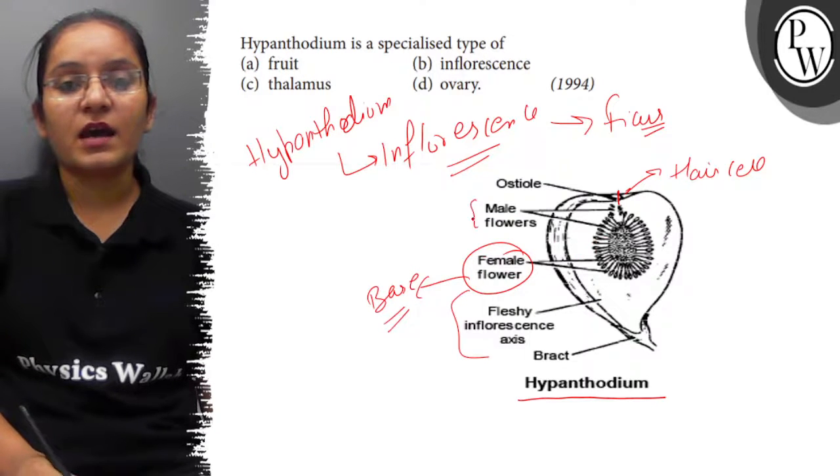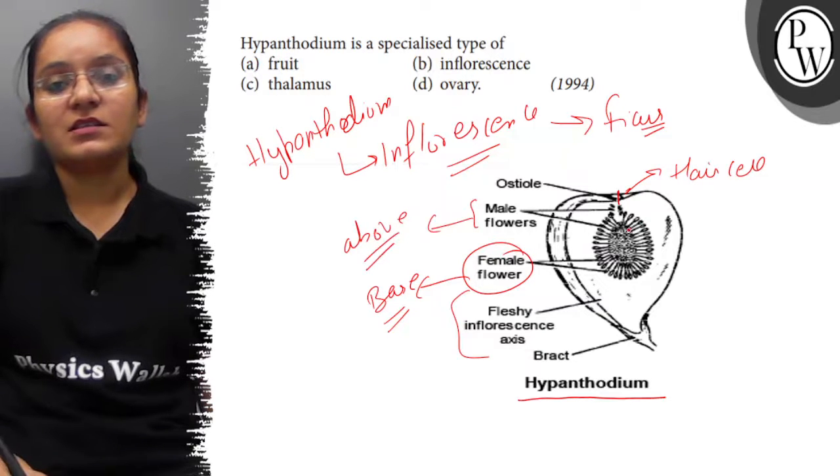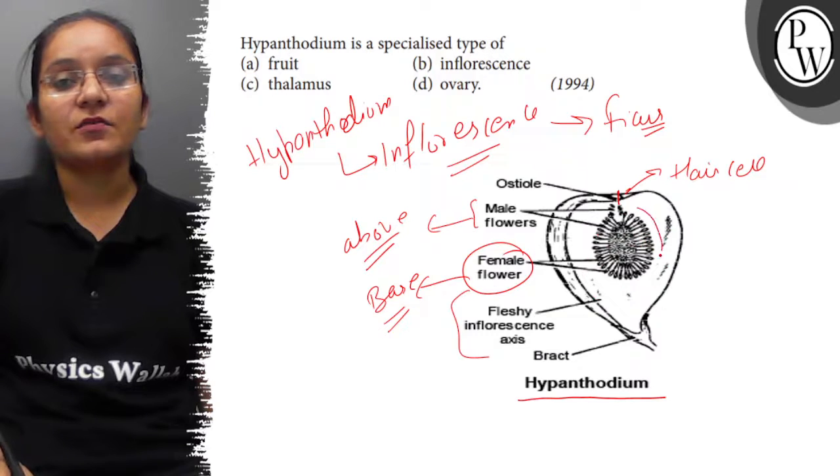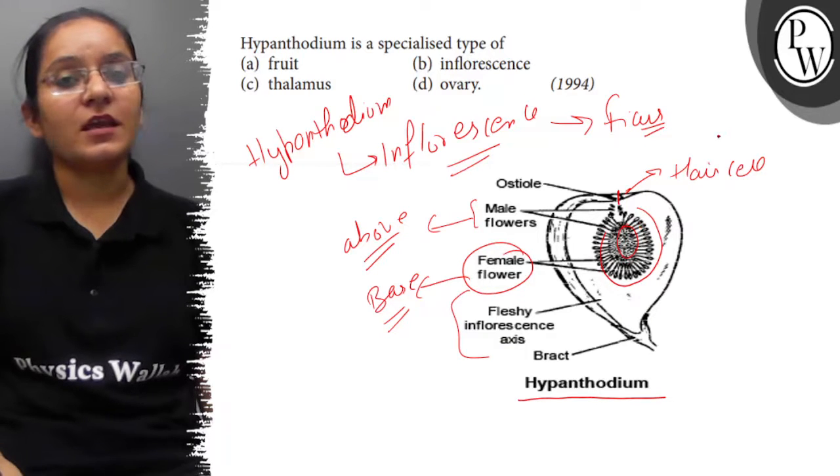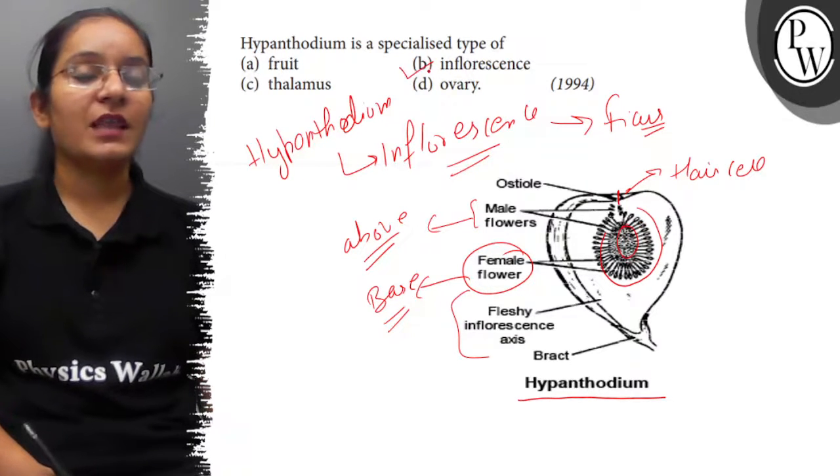Female flowers are at the base and male flowers above. This arrangement of flowers is inflorescence. So the correct answer to the question is option (b). Thank you.